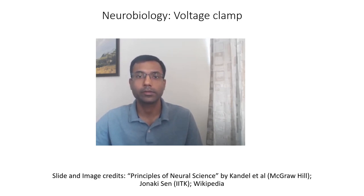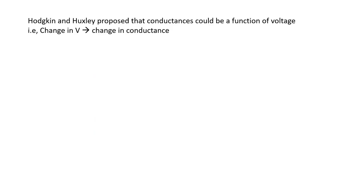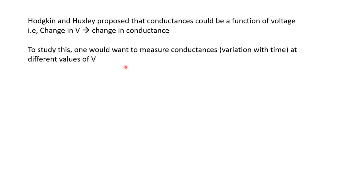As discussed in the last video, the initial experiments by Hodgkin, Huxley, and Katz showed that the conductances important for action potentials are a function of voltage. So if there is a change in the voltage of the neuron, we see a change in these voltage-gated conductances. We would like to measure how exactly these conductances change for different values of voltage — ideally by keeping the voltage at a particular value and measuring the conductance at that value.